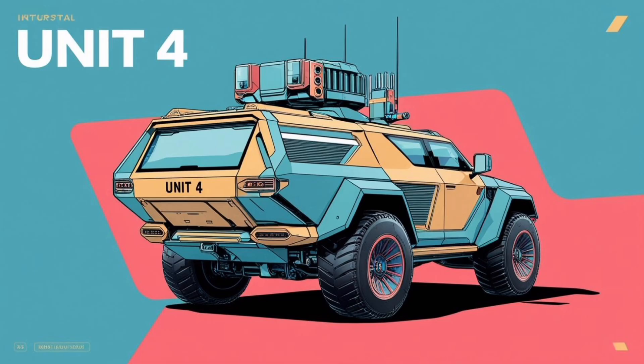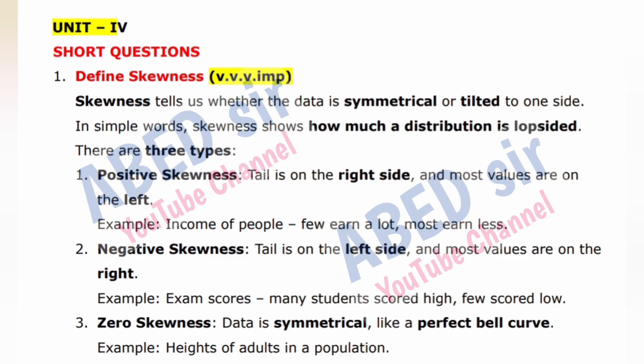Unit 4, first important short question: Define skewness. Skewness tells us whether the data is symmetrical or tilted to one side. In simple words, skewness shows how much a distribution is lopsided. There are three types. Type 1: Positive skewness — the tail is on the right side and most values are on the left. Example: income of people — few earn a lot, most earn less.